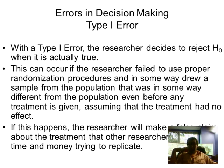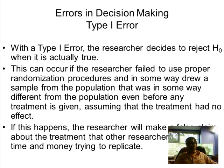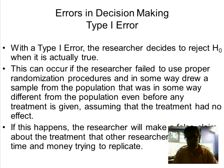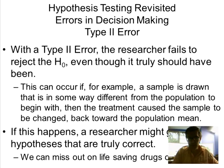In a Type 1 error, false claims get made and people waste money. Imagine if this false claim involved a new cancer drug — 'my drug cures cancer' — but it's a Type 1 error. All kinds of desperate people will spend money on a drug that doesn't do anything. That's really what a Type 1 error comes down to.